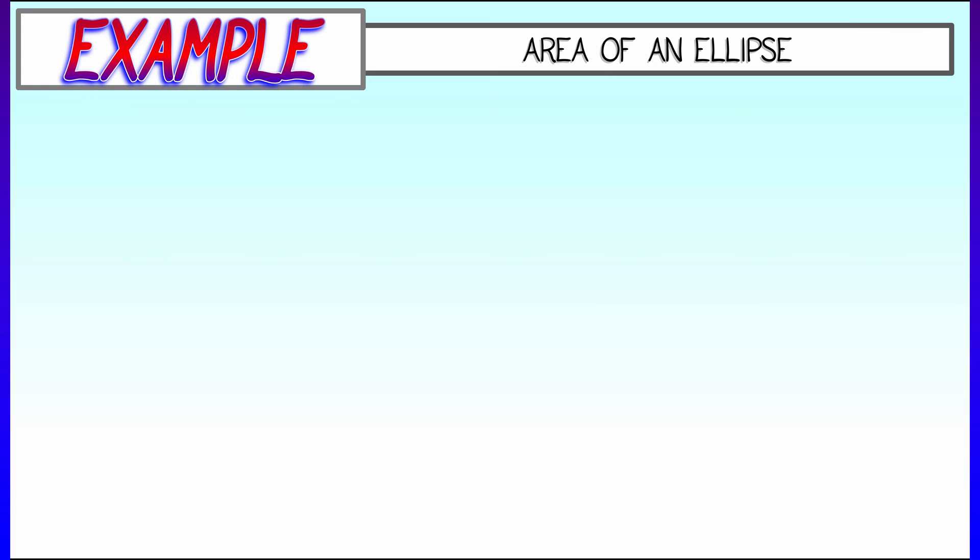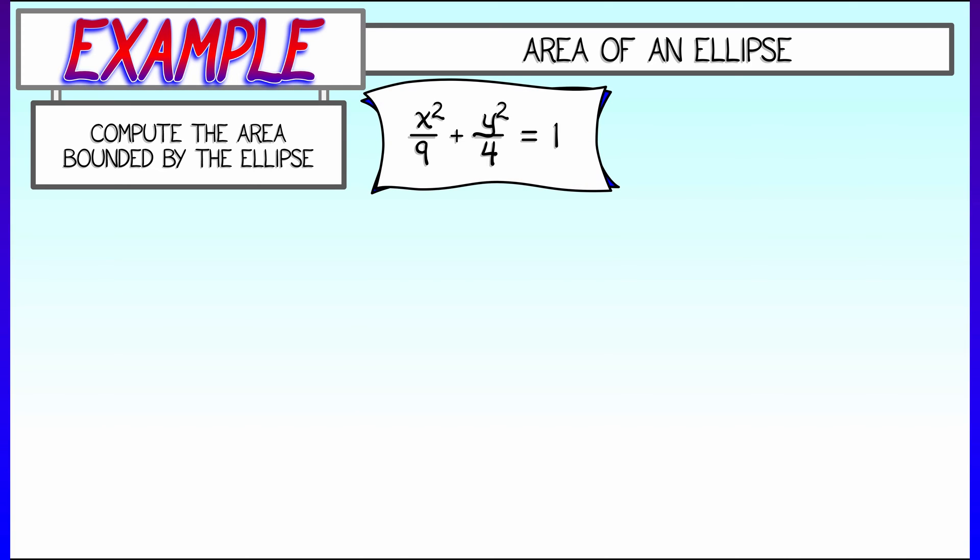Let's begin with a simple example involving computing the area of a region in the plane. In this case, an elliptical region, given by x squared over 9 plus y squared over 4 equals 1.